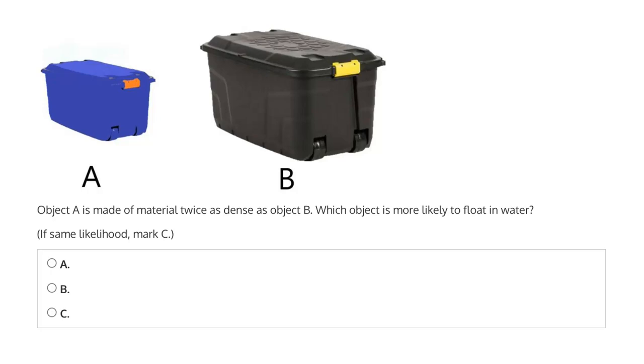Now the only information this problem gives us is that object A is twice as dense as B. We can also see from the problem that object A is much smaller than object B. And this is a bit of a red herring, because all we need to consider to answer this question is the density, which affects whether or not the object will be buoyant.